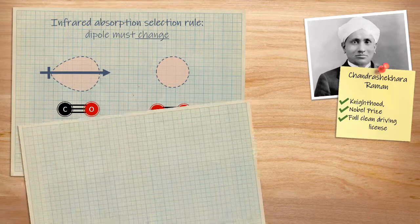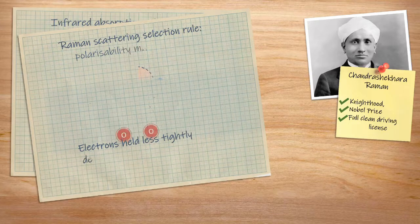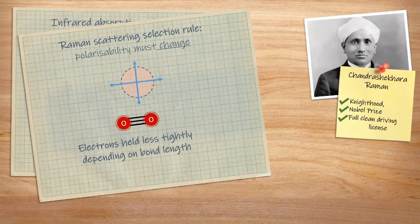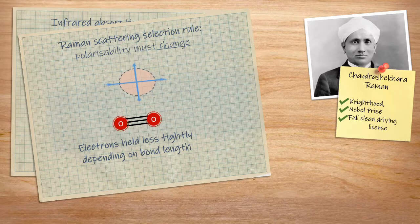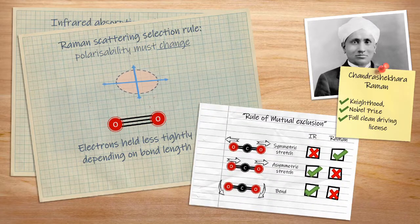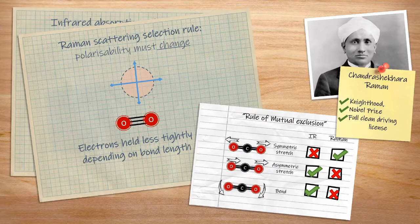In Raman spectroscopy, the gross selection rule is that polarizability must change. And generally speaking, for molecules with centers of symmetry, this means that any vibration that isn't visible in infrared absorption is visible in Raman, and any vibration that isn't visible in Raman is visible in absorption.